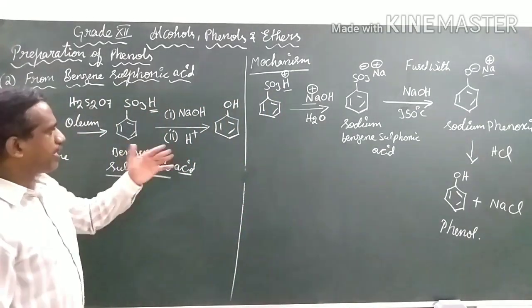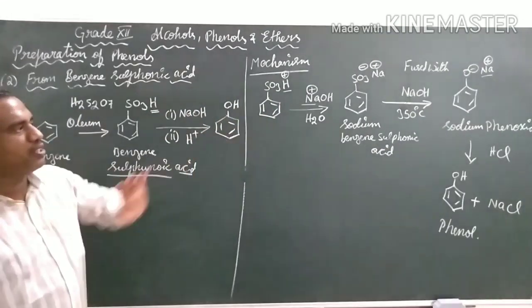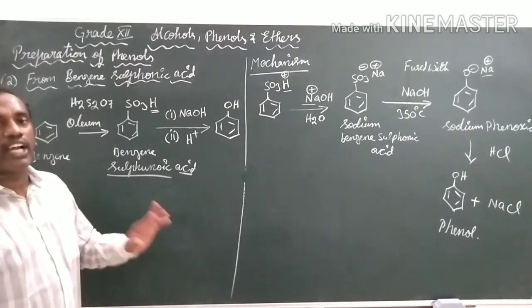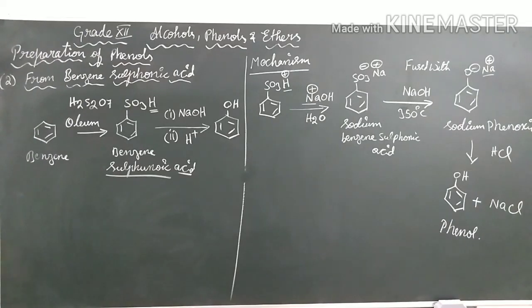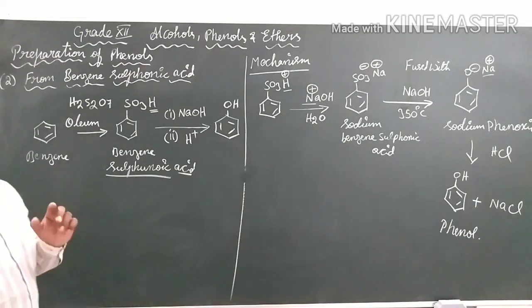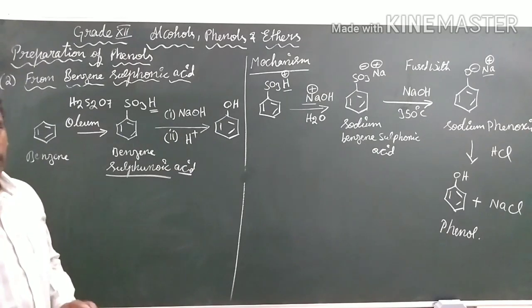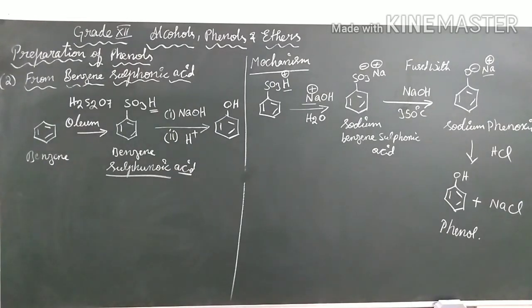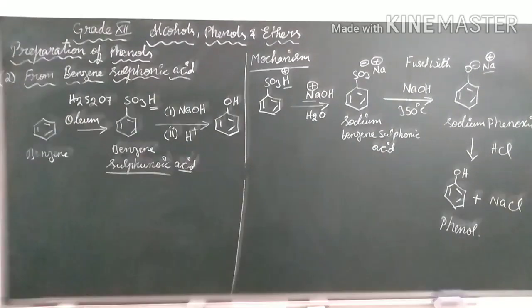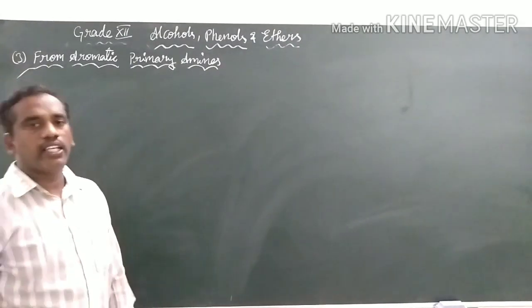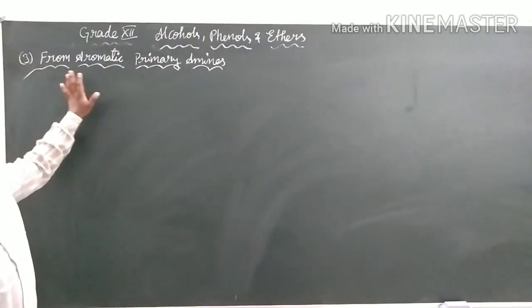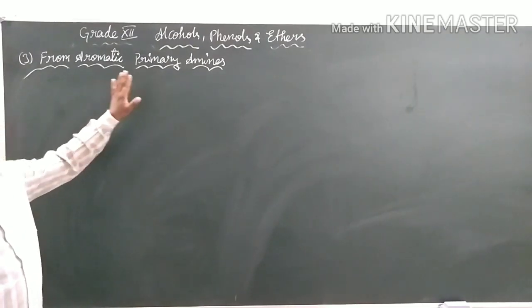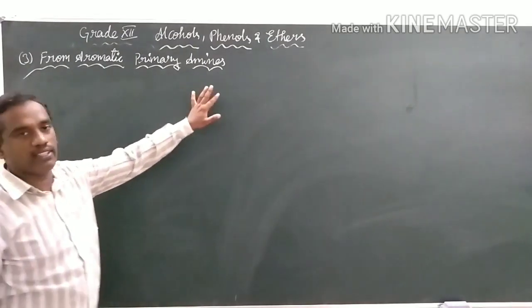In examinations, we can write the direct reaction steps. The mechanism is useful for objective understanding. So let us see the third preparation of phenol — that is, using a primary amine. The third preparation of phenol is from aromatic primary amines.